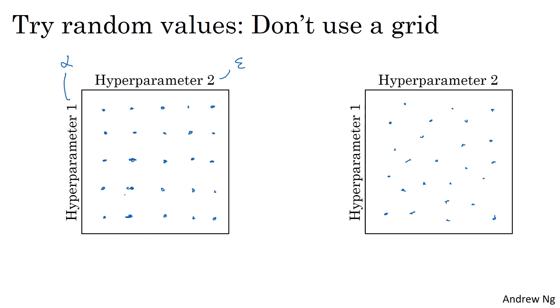So if you sample on a grid, then you've really tried out five values of alpha. And you might find that all of the different values of epsilon give you essentially the same answer. So you've now trained 25 models and only gotten to try out five values for the learning rate alpha, which is the thing that's really important.